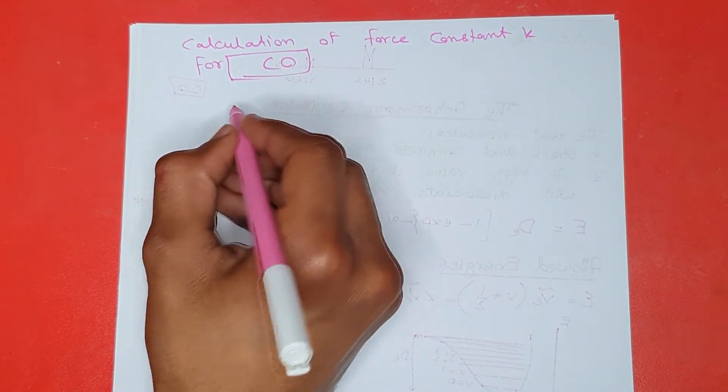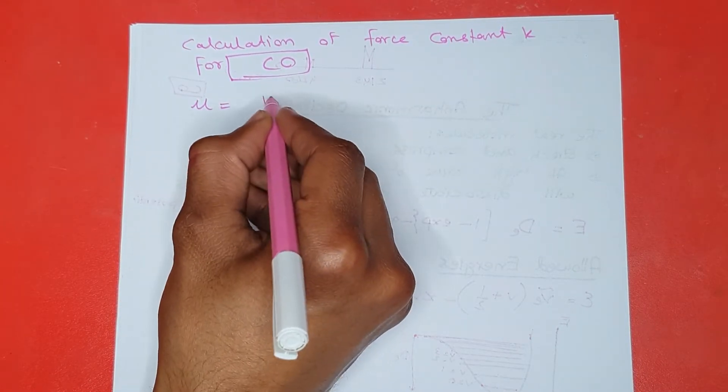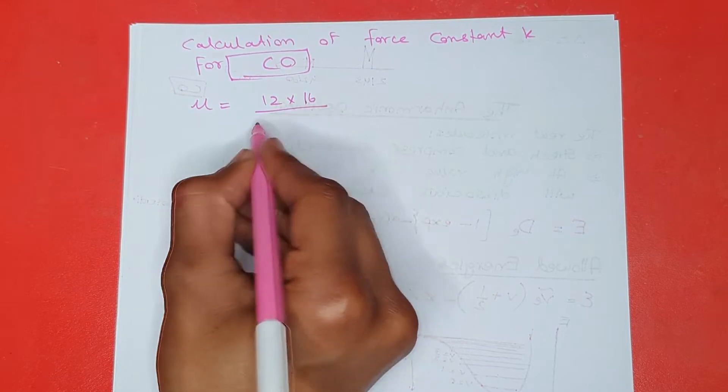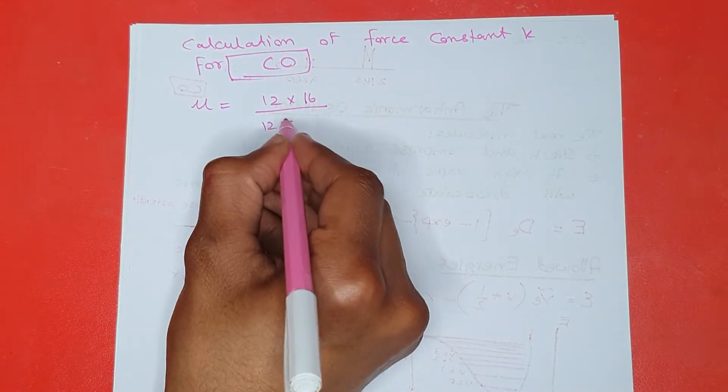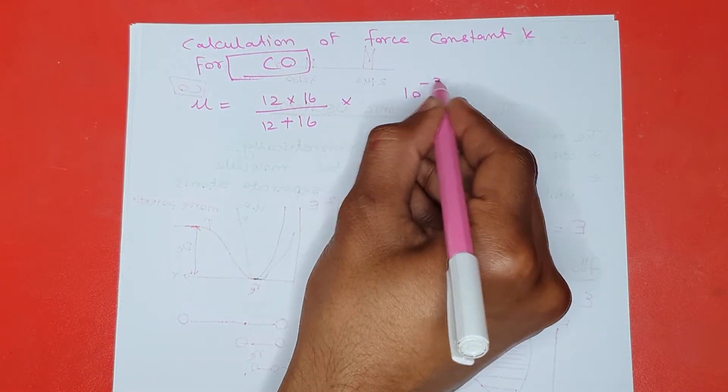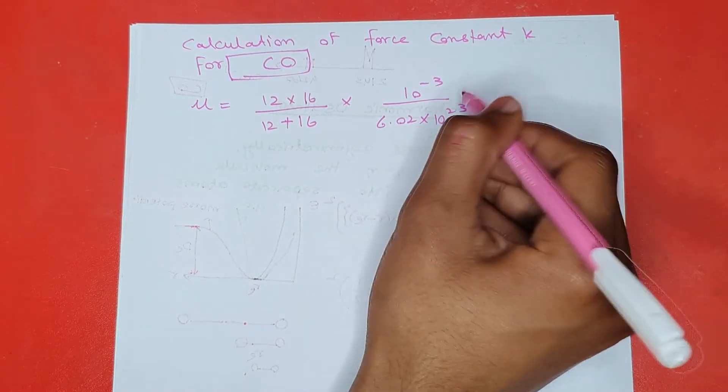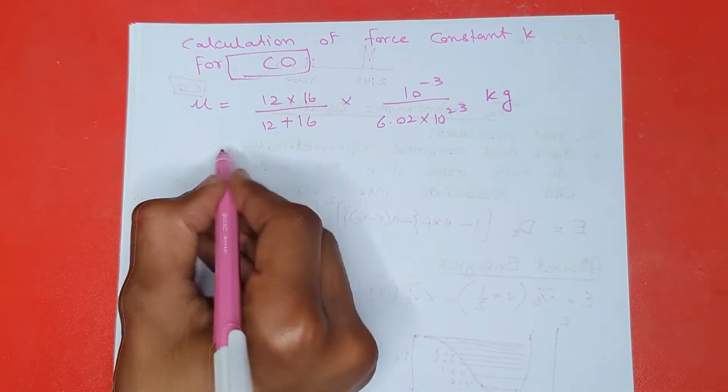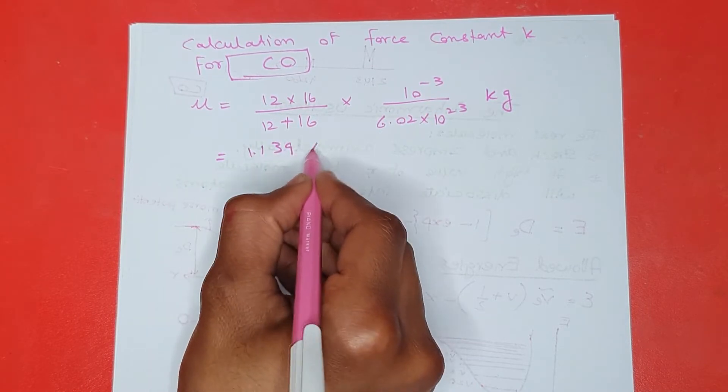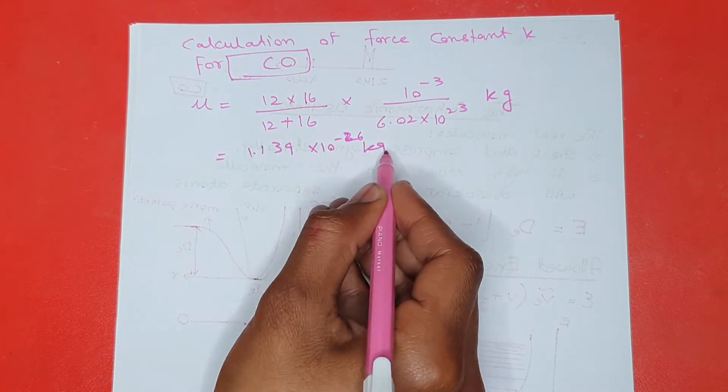For carbon monoxide, the value of reduced mass should be equal to 12 multiply 16, M1 multiply M2, divided by M1 plus M2, so 12 plus 16. Now if I multiply it by 10 minus 3, divided by 6.02 into 10 power 23, I get an answer in kg. My answer comes out to be 1.139 into 10 power minus 26 kg.